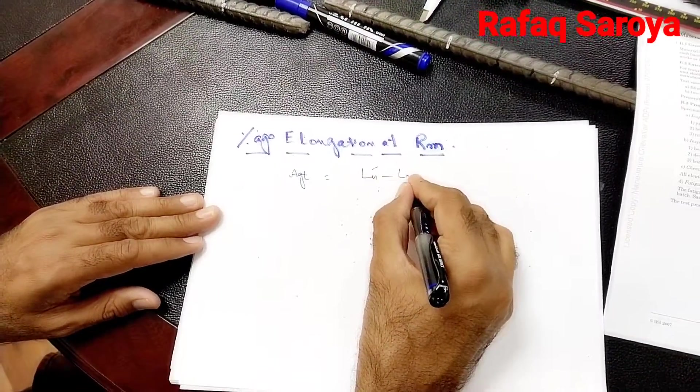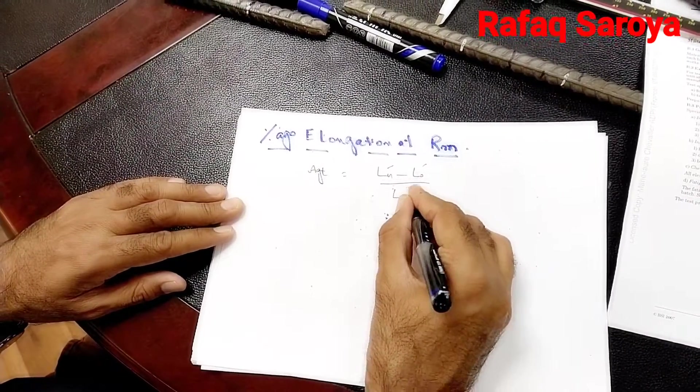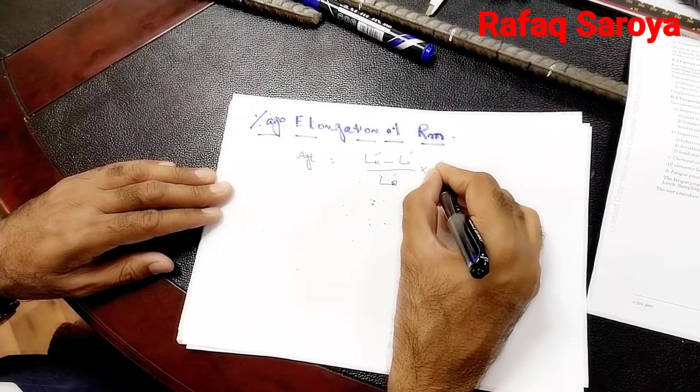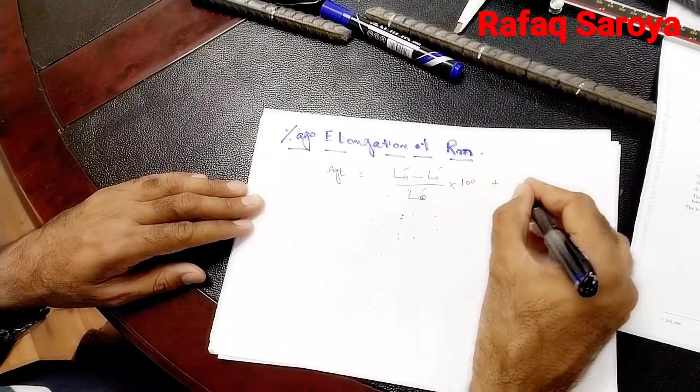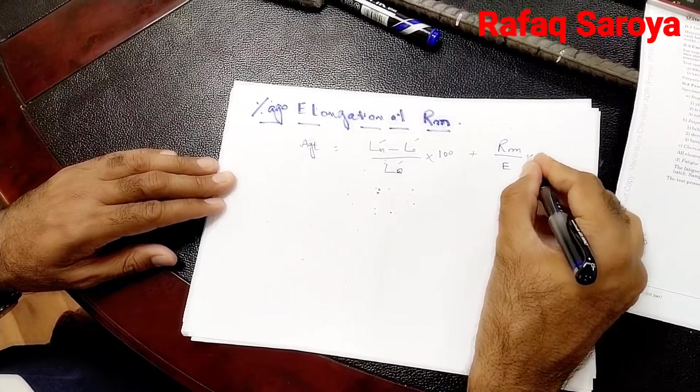LU' minus L0' over L0' into 100 plus RM over E into 100.